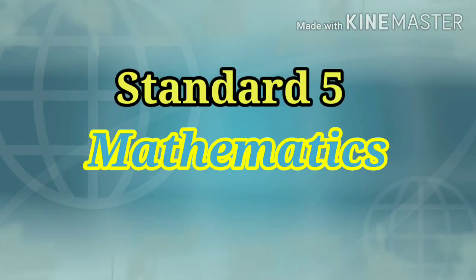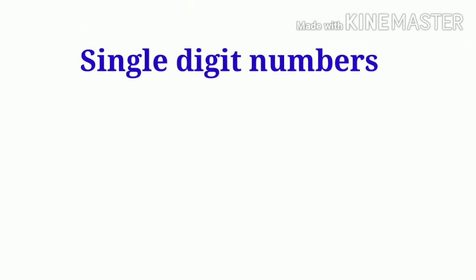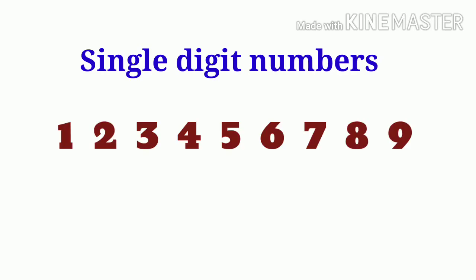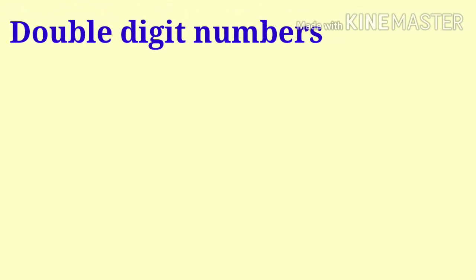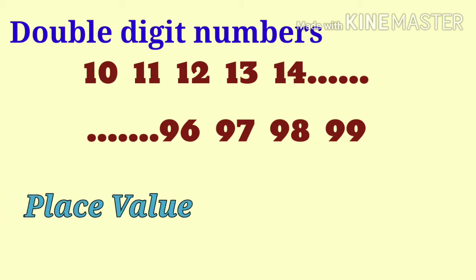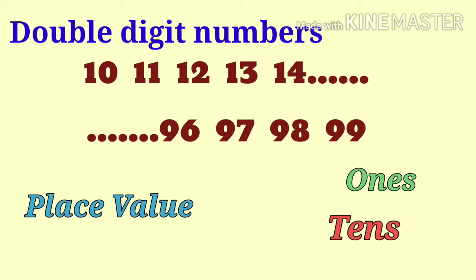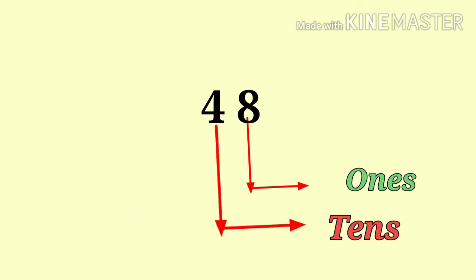Let's recall some points related to numbers. Single digit numbers are 1 through 9. The place value of a single digit number is ones. Double digit numbers go from 10 to 99 and have two digits with place values of ones and tens. For example, 48 has eight ones and four tens.